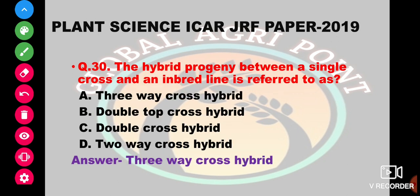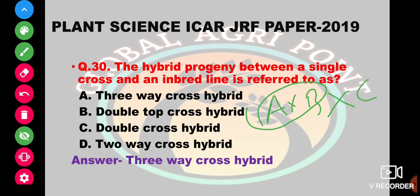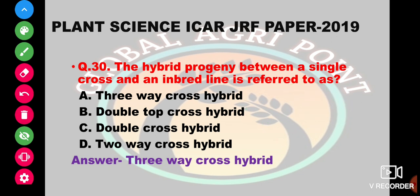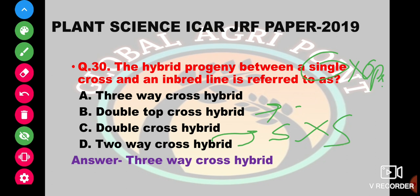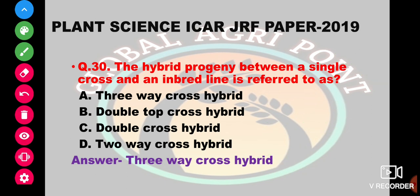The hybrid progeny between a single cross and an inbred line is referred to as what? A single cross is a cross between two inbred lines; when crossed with another inbred line, it is called a three-way cross. A double top cross is a single cross crossed with an open-pollinated variety. A double cross is two single crosses crossed. The answer is three-way cross hybrid.